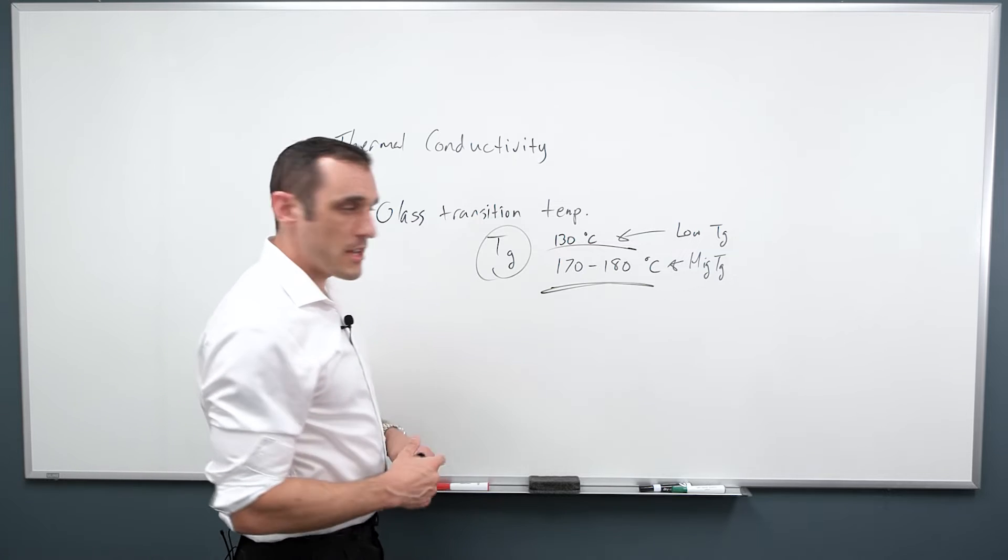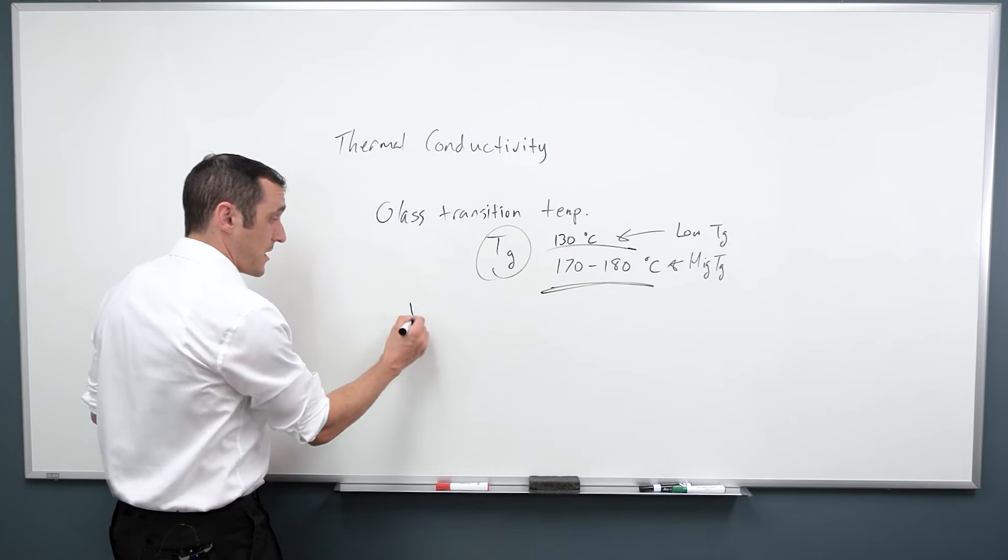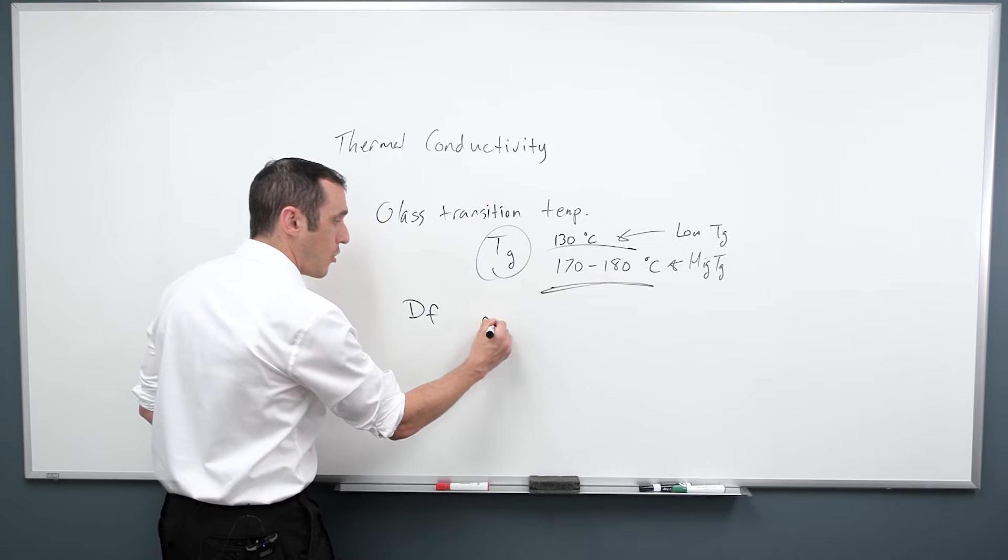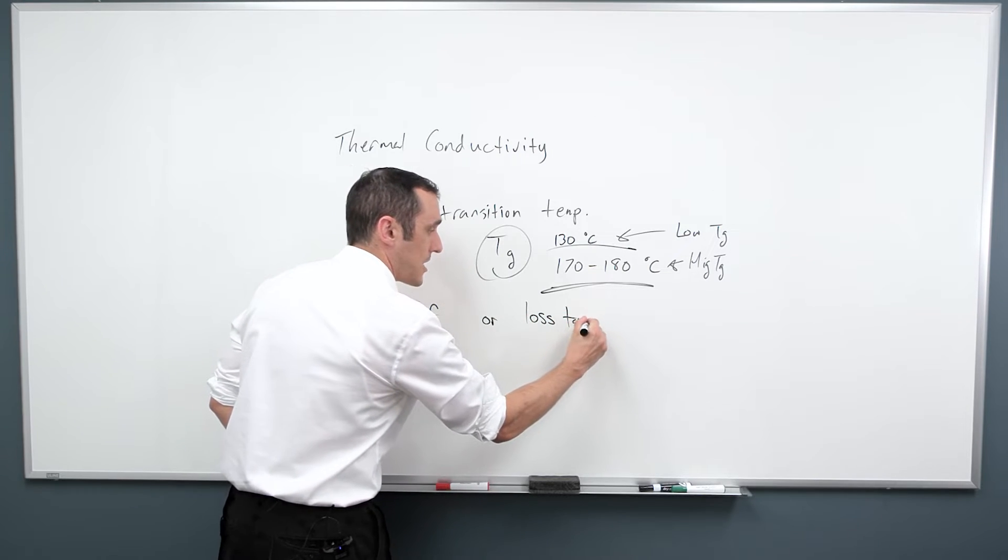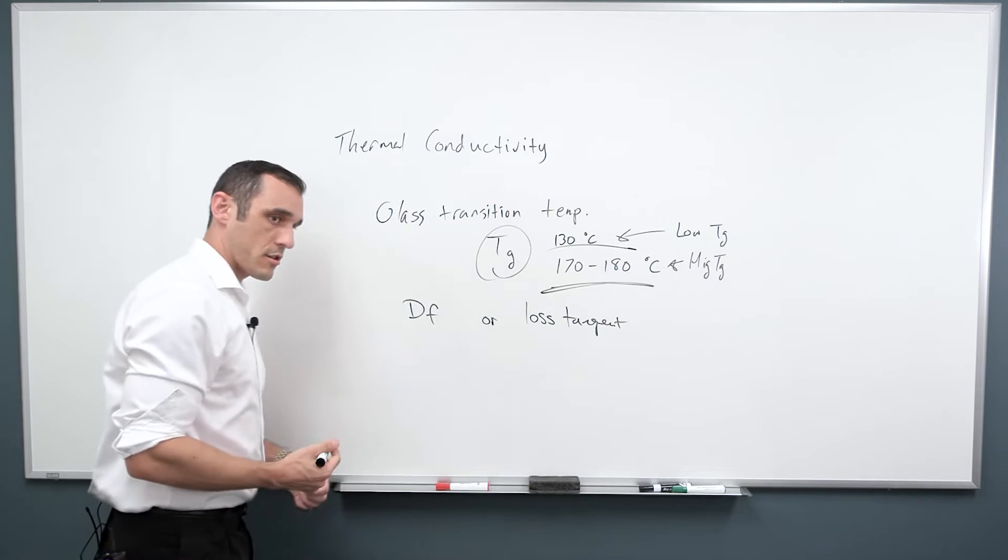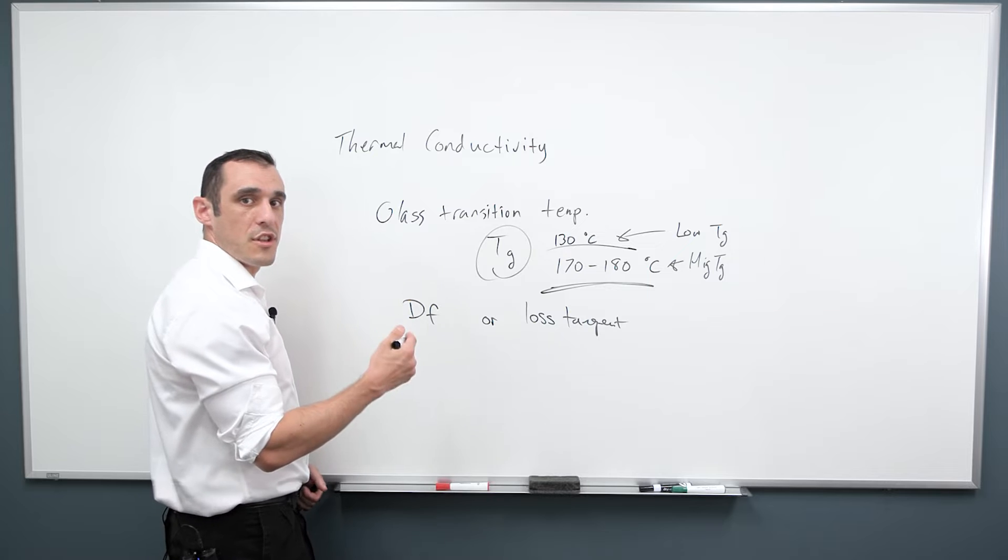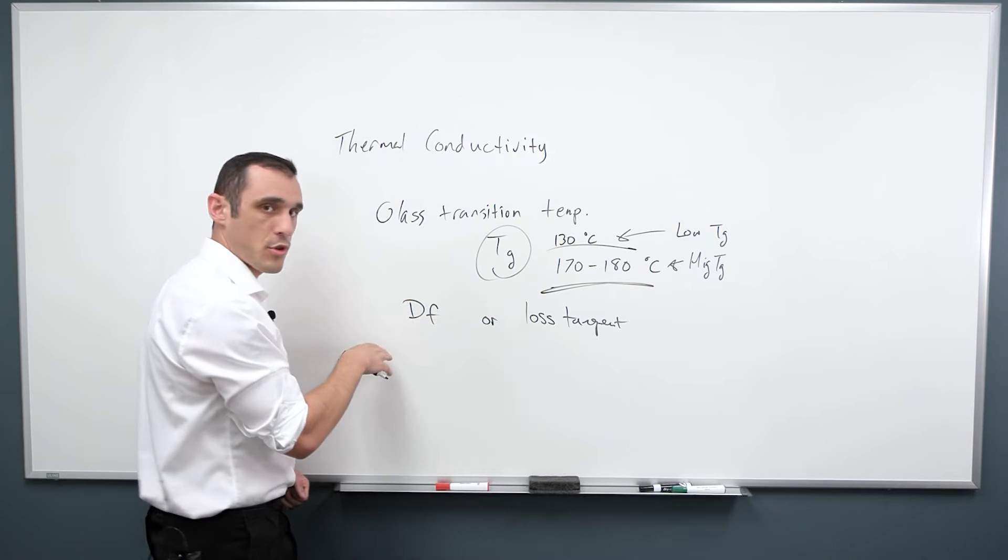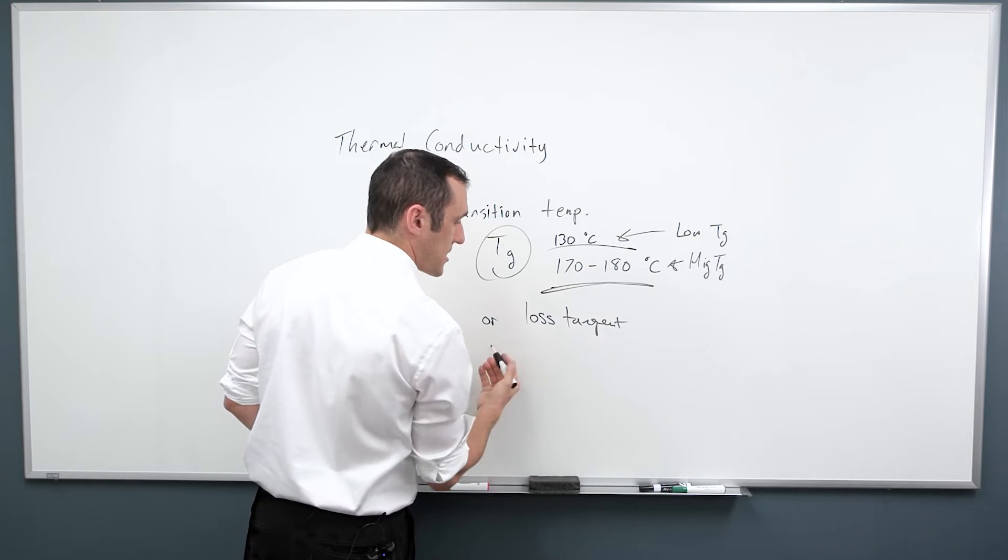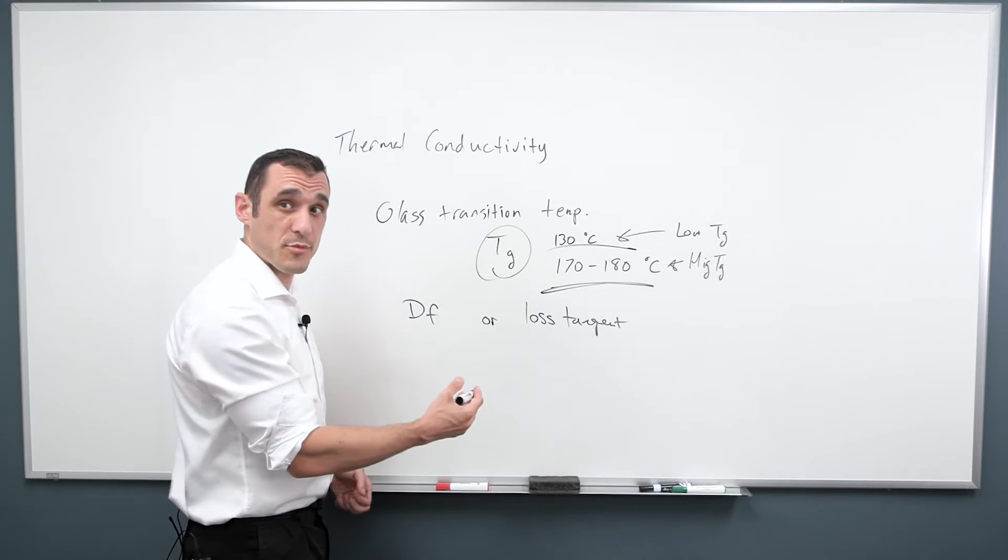The next important material property that you can get out of data sheets is more important for high speed design, which is usually denoted DF for dissipation factor or loss tangent. And these two values are sometimes used interchangeably. Rarely you will see DF used to denote the complex portion or the imaginary portion of the dielectric constant.